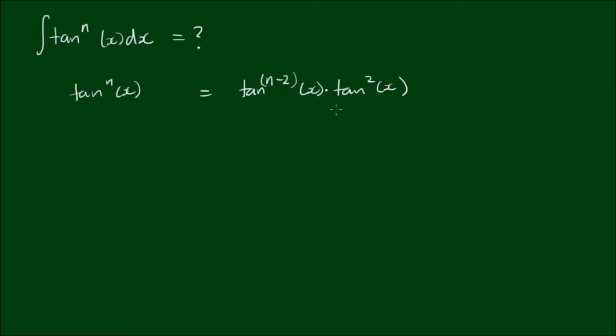And in doing this we can express tan squared as the secant squared of x minus 1 because this is the Pythagorean identity.